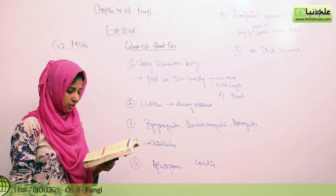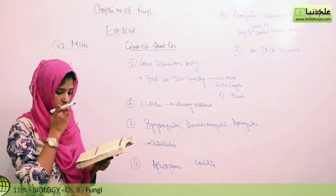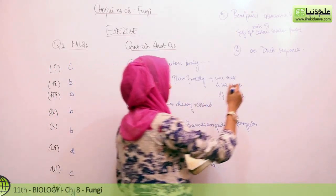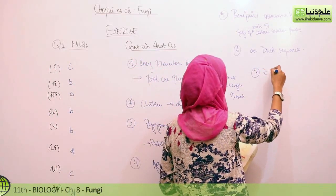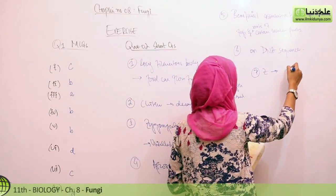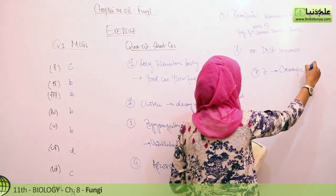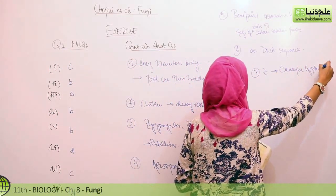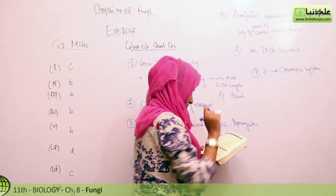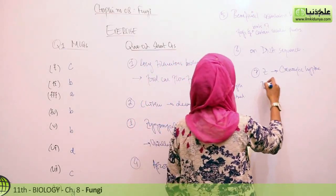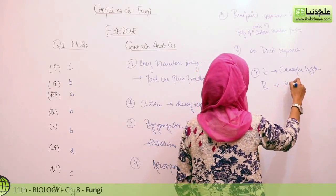Next question, give a single characteristic that differentiates zygomycetes from basidiomycetes. Singular characteristic ye hai that zygomycetes have coenocytic hyphae, yaani ke aseptate hyphae. Aur doosra hai, ascomycetes ka basidiomycetes ka puchhna hai, they have septate hyphae.